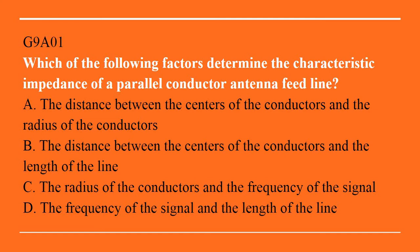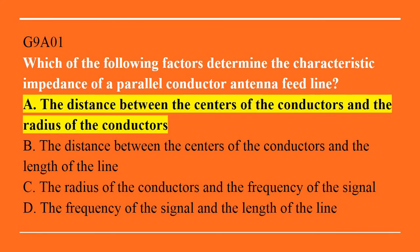G9A01: Which of the following factors determine the characteristic impedance of a parallel conductor antenna feedline? A. The distance between the centers of the conductors and the radius of the conductors. B. The distance between the centers of the conductors and the length of the line. C. The radius of the conductors and the frequency of the signal. Or D. The frequency of the signal and the length of the line. The answer is A — the distance between the centers of the conductors and the radius of the conductors.